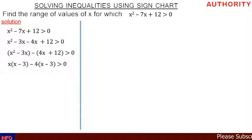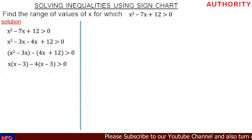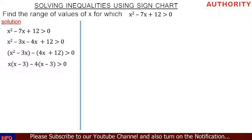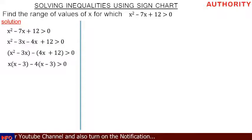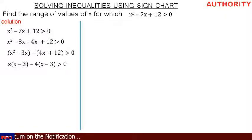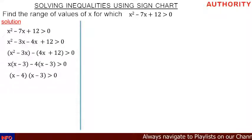In minus 4x plus 12, we factor out minus 4. Minus 4 times x gives minus 4x, and minus 4 times minus 3 gives plus 12, so we get minus 4(x minus 3). Now we have two brackets with the same inner term. We pick the values outside the brackets to get (x minus 4), and pick one of the inner values which is (x minus 3), giving us (x minus 4)(x minus 3) greater than zero.